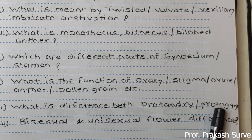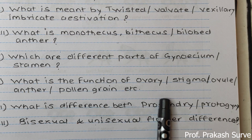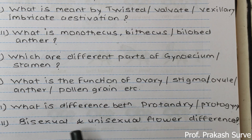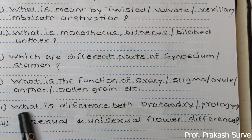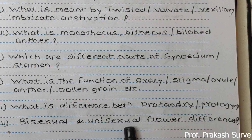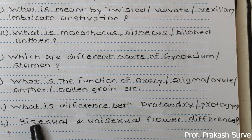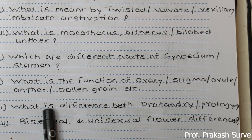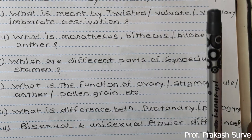What is the difference between protandry and protogyny? Protandry means the androecium matures first; protogyny means the gynoecium matures first — both favor cross-pollination. What is the difference between bisexual and unisexual flowers? Bisexual means both sexes are present in the flower; unisexual means only one sex is present. In hibiscus, since both androecium and gynoecium are present, it is a bisexual flower.